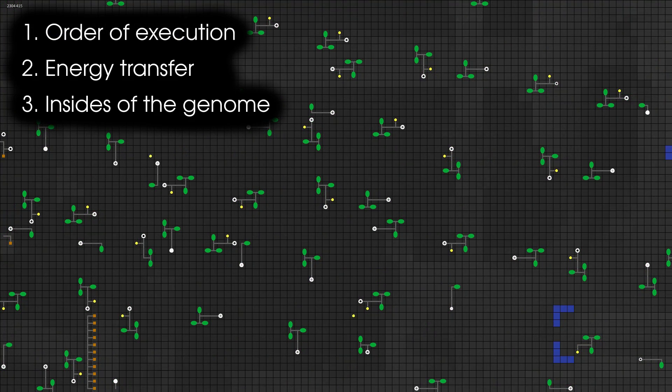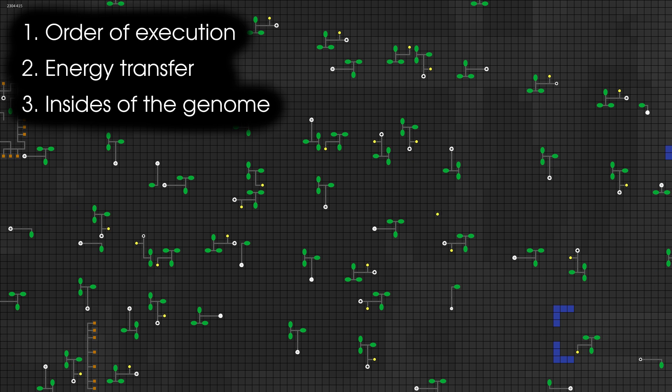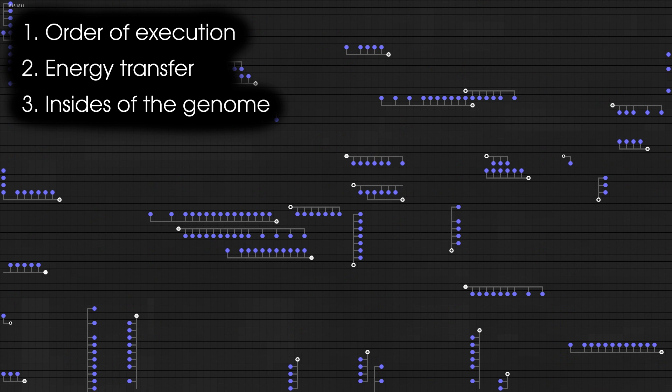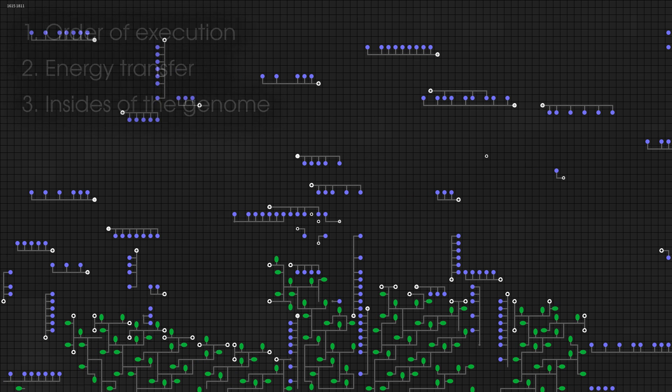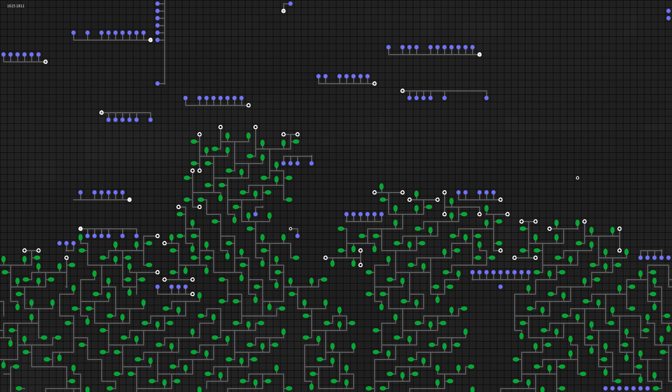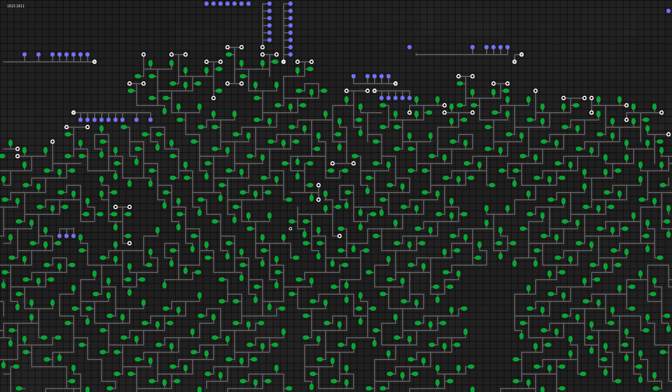Let's begin with the cell's execution order. The simulation is run on a CPU, so you must go through all the cells sequentially and perform the necessary actions. It is necessary to devise such a solution that none of the cells would have an advantage from the execution order.